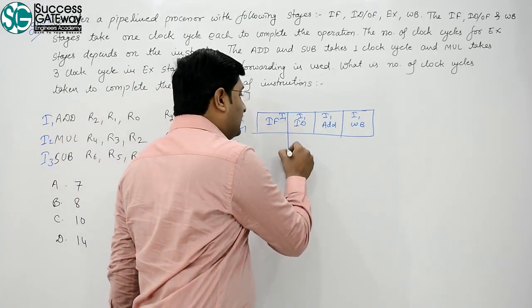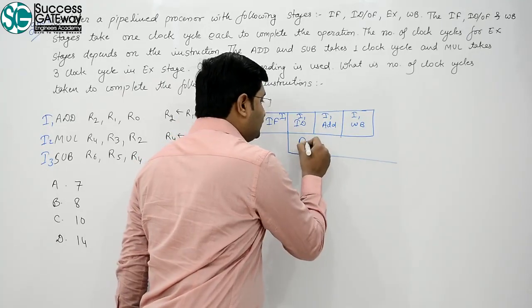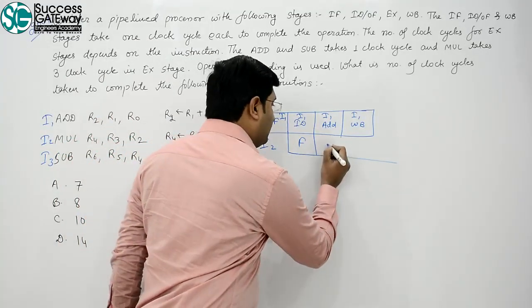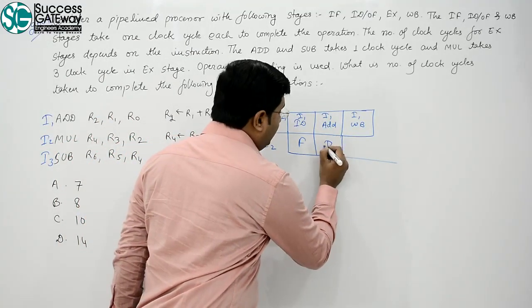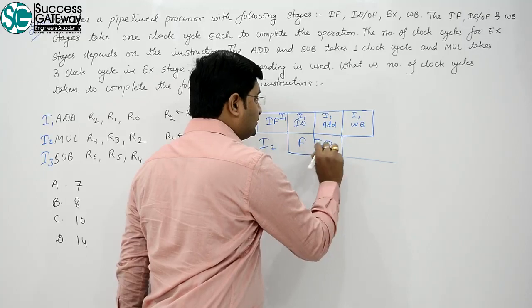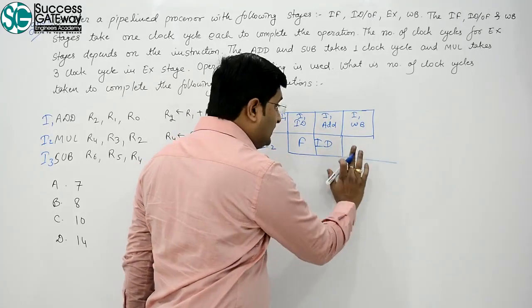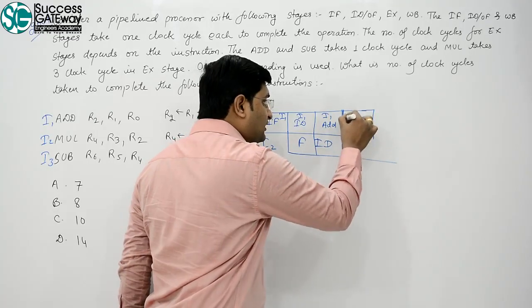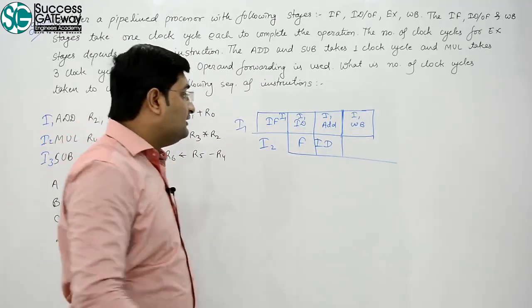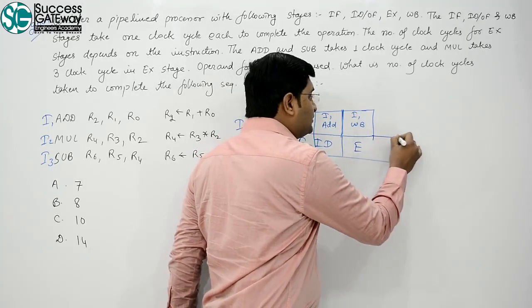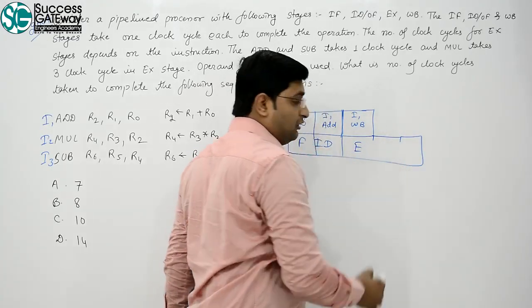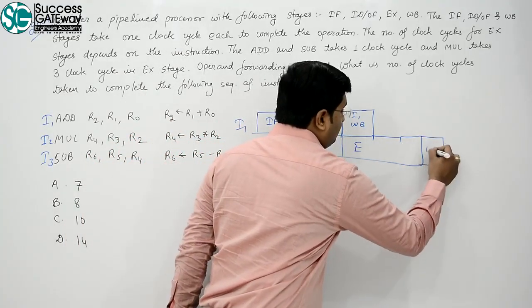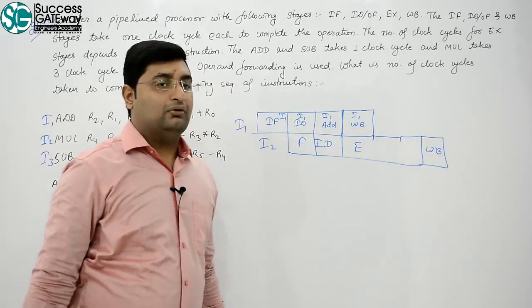Ye I1 stage, now it is fetch for I2. Fetch will take one clock, decode start ho sakta hai, next instruction decode, next multiply execute. Yehaan pe ye previous apna execution complete kar chuka hai, we can start that execute, but multiplication takes 3 clocks. And write back, we will take one more clock.